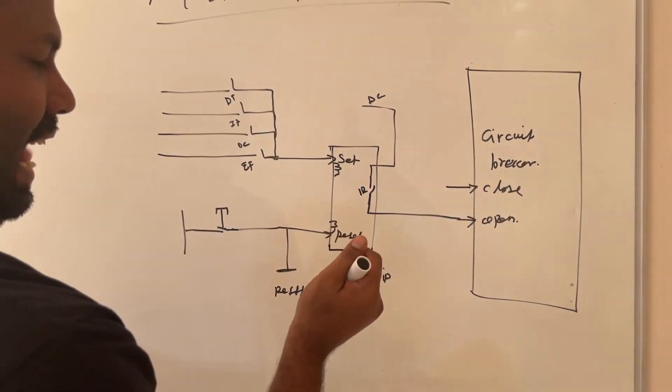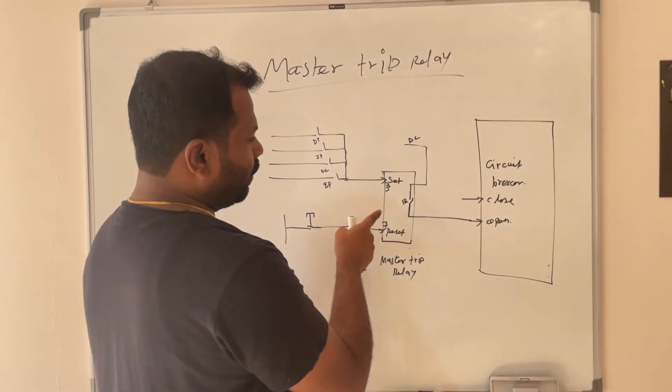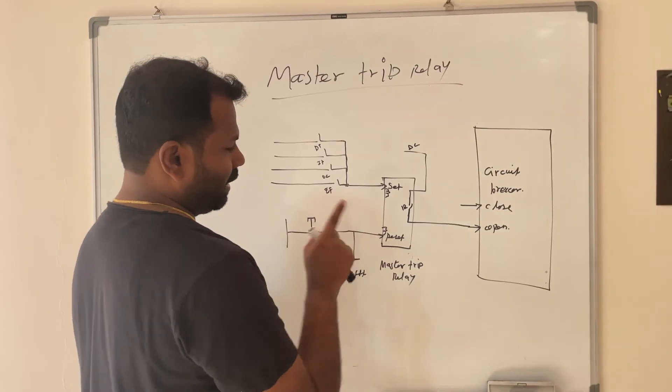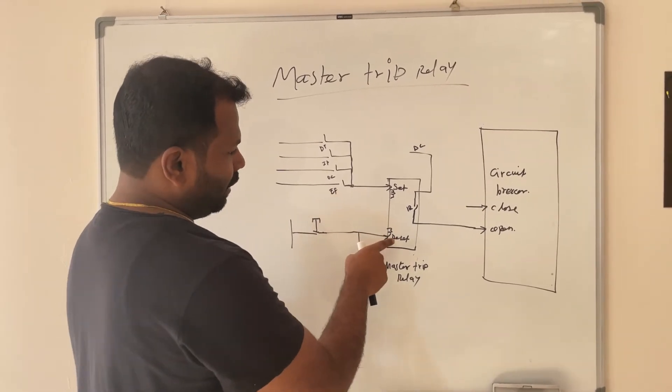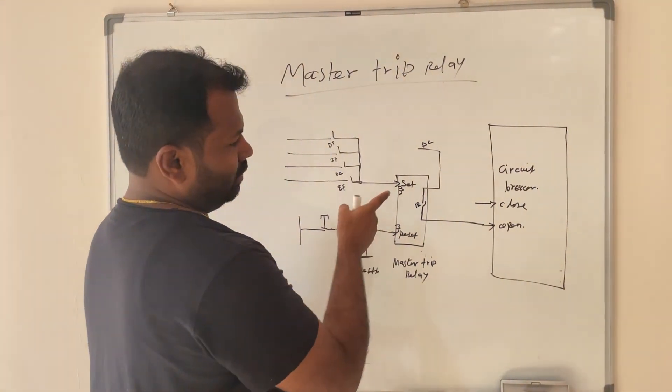This relay will work like a latch relay. Once this fault is activated and breaker is tripped, you have to reset manually or electrically by giving supply to reset coil, or mechanically you can reset the master trip relay. Unless you reset, the breaker will remain in open condition or trip condition.